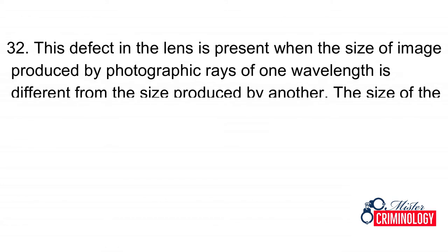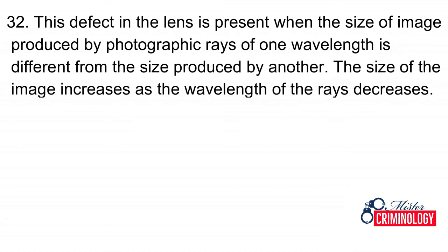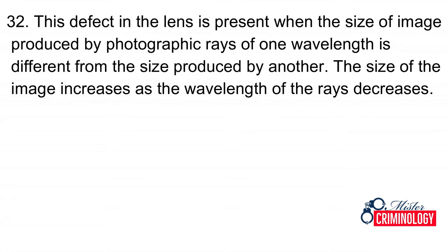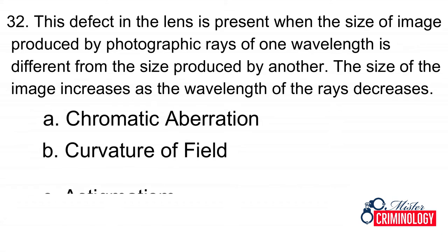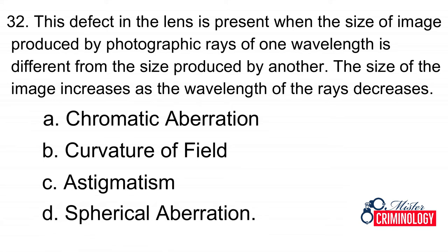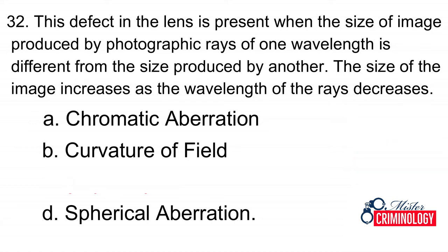Question 32: This defect in the lens is present when the size of the image produced by photographic rays of one wavelength is different from the size produced by another. The size of the image increases as the wavelength of the rays decreases. A. Grammatic Aberration, B. Curvature of Field, C. Astigmatism, D. Spheric Aberration. Answer: C. Astigmatism.